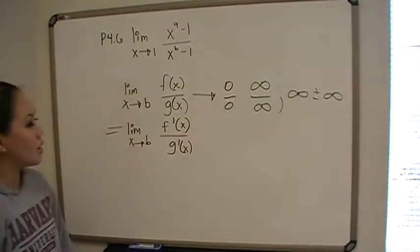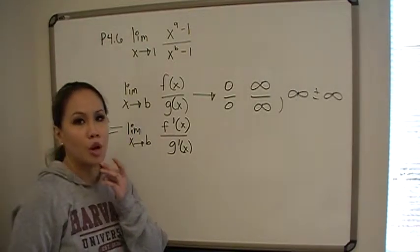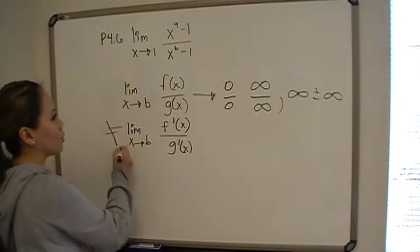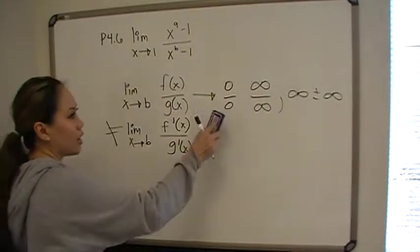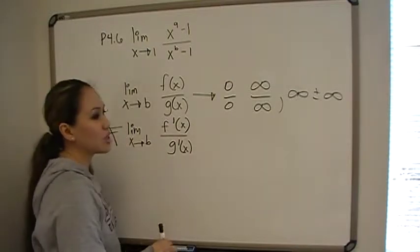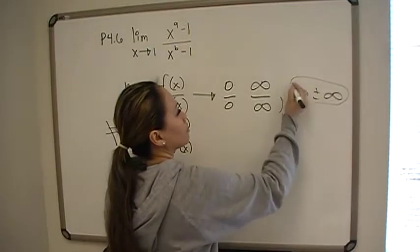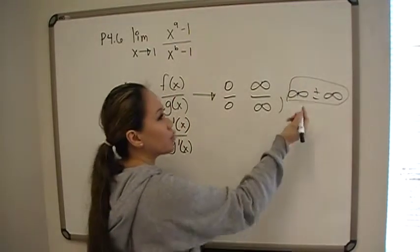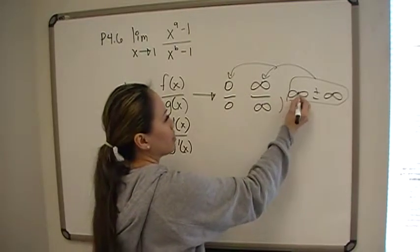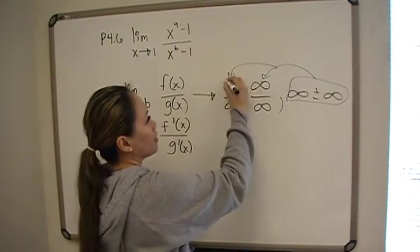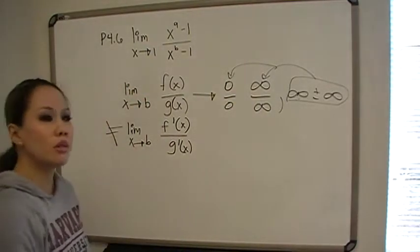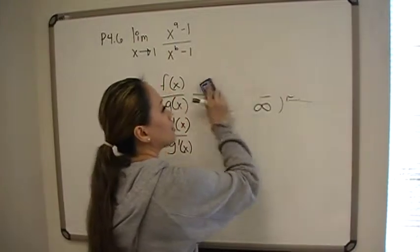It's very important to note that L'Hopital's rule will not hold true if the limit exists. If it's not of this form, we cannot apply L'Hopital's rule. Actually, if you get the infinity plus minus infinity form, you can apply L'Hopital's rule, but you have to get it in a form where it's a quotient, not a product.